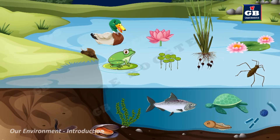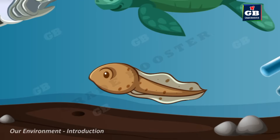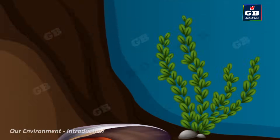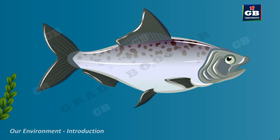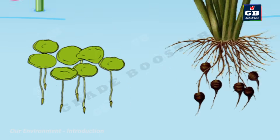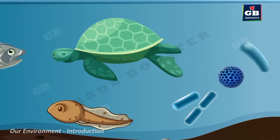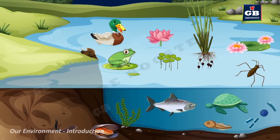Now let us see the different organisms of a pond ecosystem. Animals like pond snail, pond skater, tadpoles, turtle, duck, marshals, leech, fish, and frog. Plants like water lily, lotus, duckweed, and water chestnut. Microorganisms like bacteria and protozoa — all these are the biotic components of a pond ecosystem.